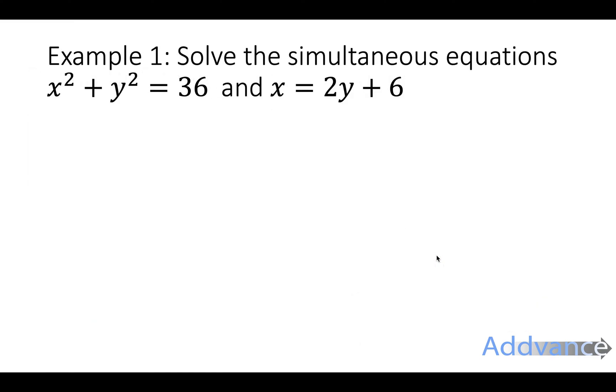So straight away let's have a look at this example. Solve the simultaneous equations x squared plus y squared equals 36 and x equals 2y plus 6. Copy them down and what we're going to do is we're going to replace the x in the first equation by the x in the second equation. So the x is going to be replaced by 2y plus 6.